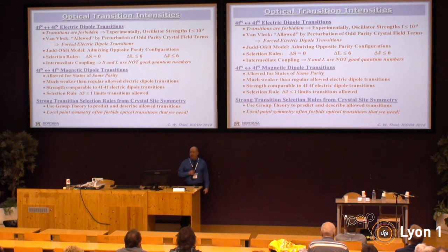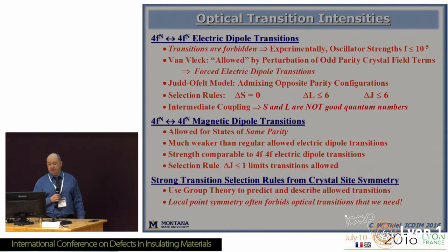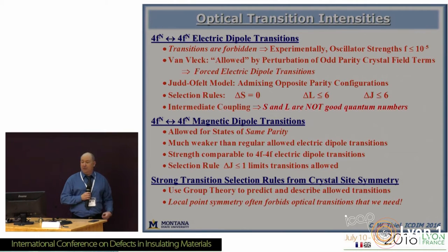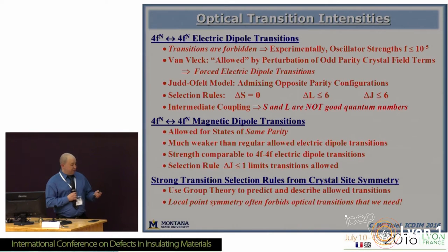For some transitions, such as the 1.5 micron transition of erbium, you can actually be magnetic dipole allowed if they satisfy ΔJ < 1 and ΔS = 0 selection rules, in which case the transition probability is about the same size as the electric dipole, leading to some interesting consequences in terms of selection rules and properties. All of these aspects vary critically with crystal symmetry, point symmetry, and perturbations of that symmetry.